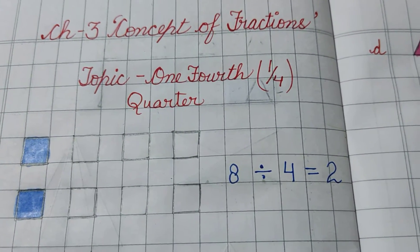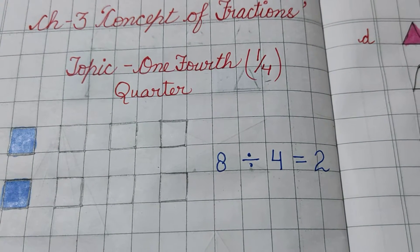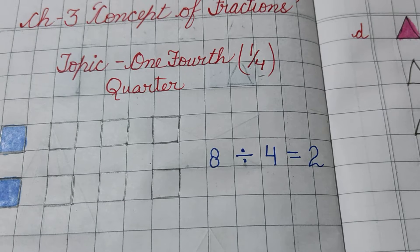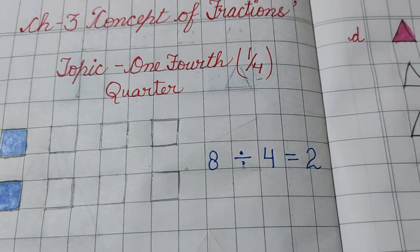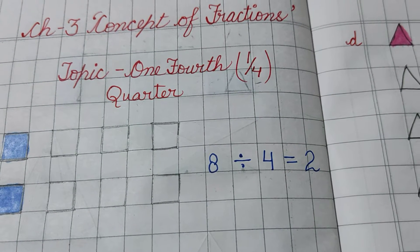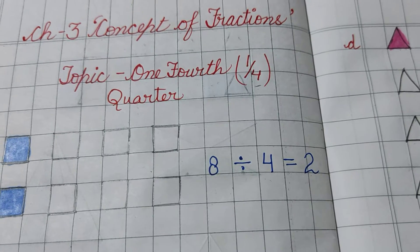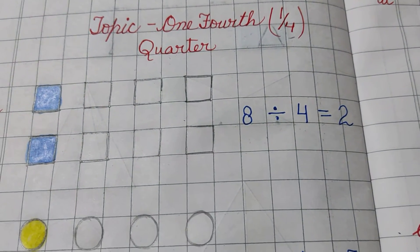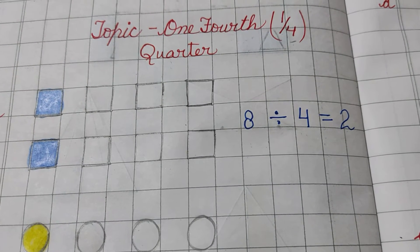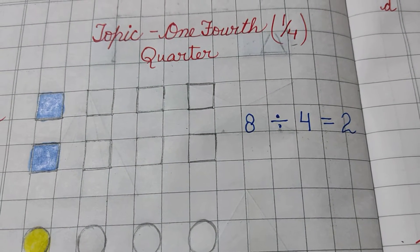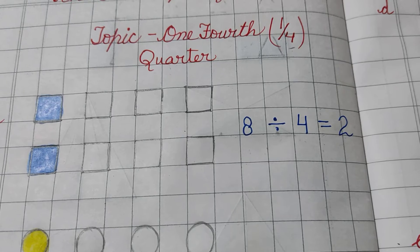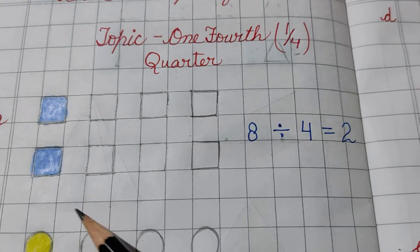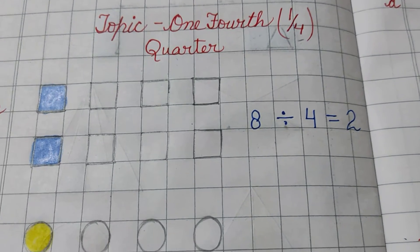In earlier videos you have seen, it is very easy to mark 4 equal parts of a shape and we have to color one-fourth part to denote that part. Okay, but if the number of things are more, then how to find out one-fourth? Then we have to divide the number by 4 to get the answer. In today's video, we will do this in the same way.